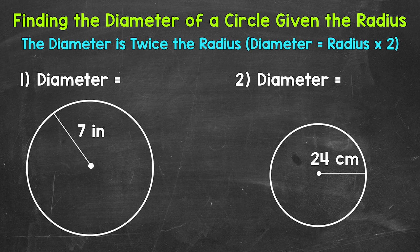On the other hand, a diameter is a line segment that connects two points on a circle and it has to go through the center, so it cuts or divides a circle in half — into two equal pieces.